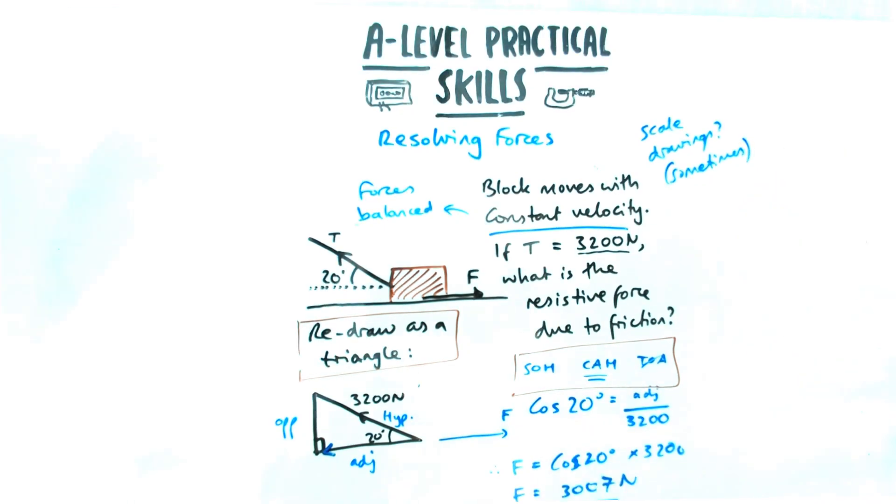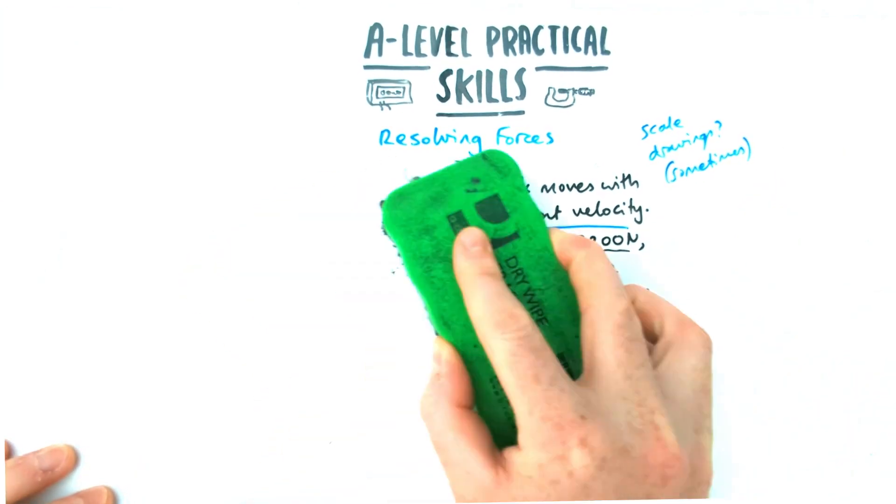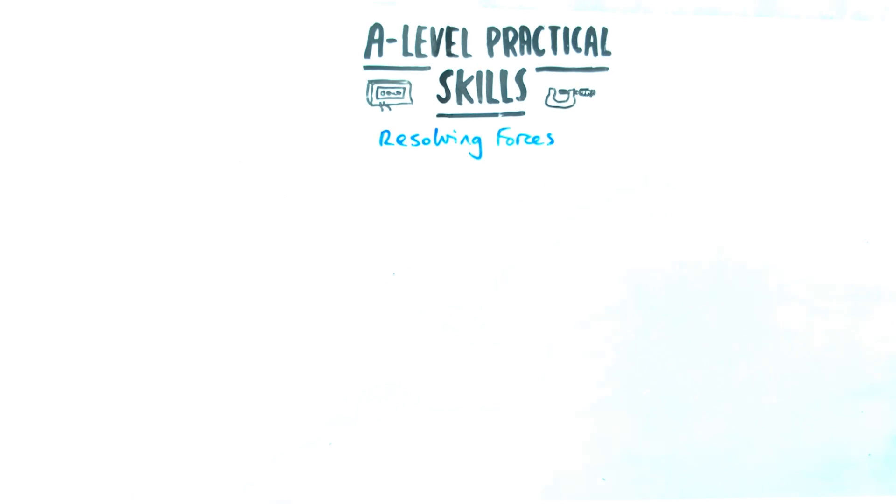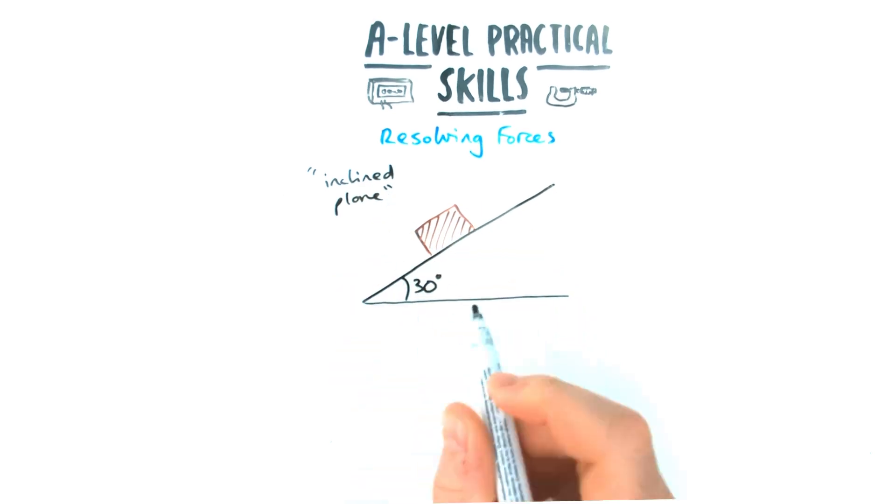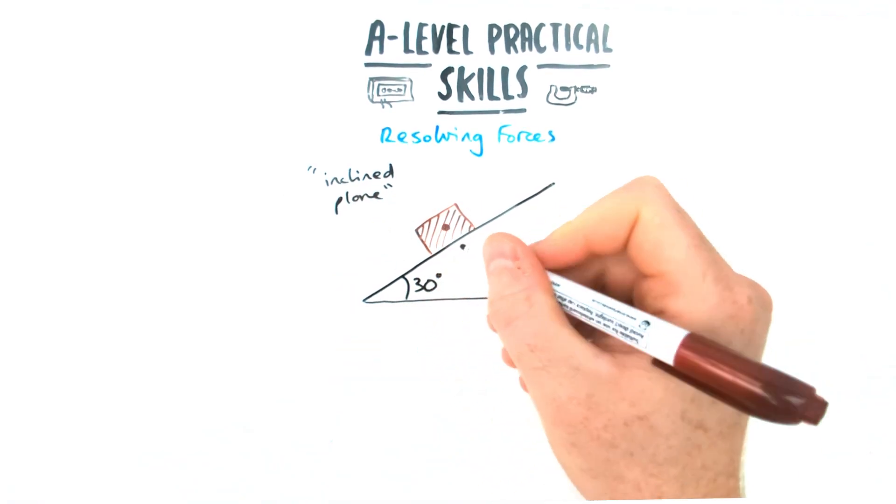You could be asked to do it as a scale drawing, but more likely you're asked to do Pythagoras and triangle. A really common situation in physics is to get an inclined plane. You'll get these in A-level maths as well, meaning I've got an object on a slope.